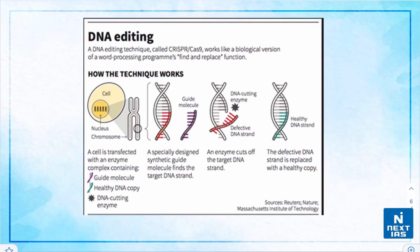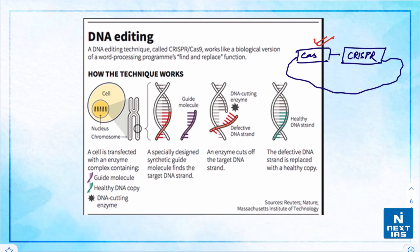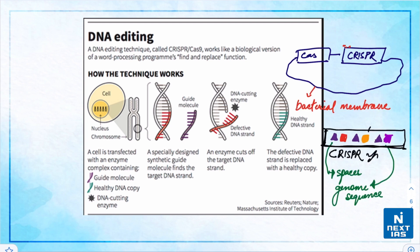Let us see how this mechanism works in a bacterium. The bacterial cell has a circular genome consisting of a cas gene and a CRISPR region. The cas gene makes the Cas protein enzyme, and the CRISPR region in the bacterial membrane has repeats of the genome sequence of the bacteria with spaces in between.